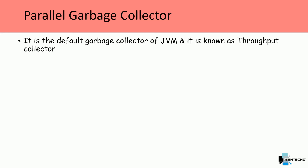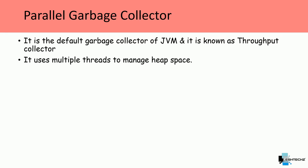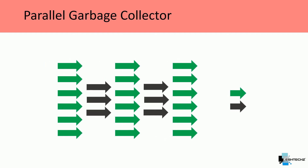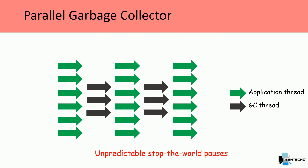The next one is the Parallel garbage collector. It is the default garbage collector of the JVM and is known as the throughput collector. It uses multiple threads to manage heap space. It uses the same generational approach — copying in the young generation and mark-compact in the old generation. However, the stop-the-world pauses are still unpredictable with this garbage collector.